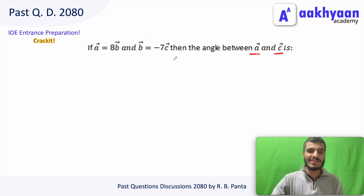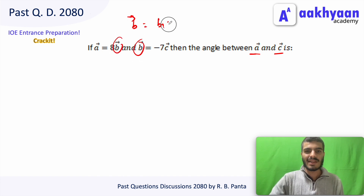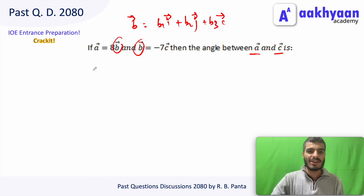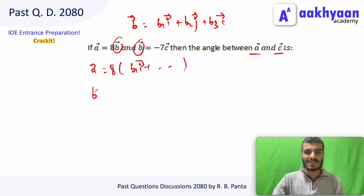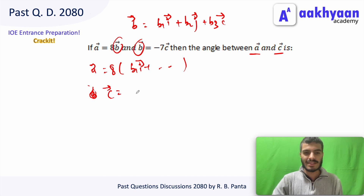We write vector a in component form as b vector: b1 i + b2 j + b3 k. Since b = -7c, vector c is equal to b divided by -7, which equals (1/7) times b vector with components b1 i + ... So c vector is derived from b vector.